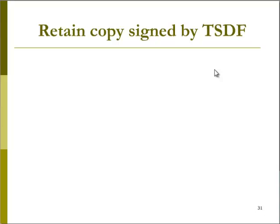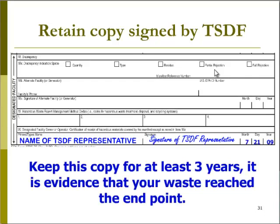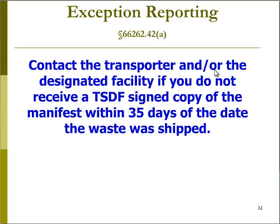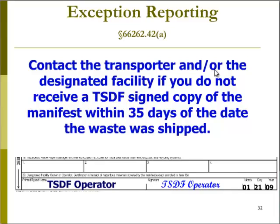A business must receive a copy of the manifest signed by the TSDF — it is this copy that the business must keep for at least three years. Exception reporting is found in Section 66262.42. The business must contact the transporter and perhaps the designated facility if it does not receive a TSDF-signed manifest within 35 days of the shipment date. If that contact does not produce a signed manifest, the business must write an exception report. For large quantity generators, this exception report must be submitted to DTSC within 45 days of shipment. Generators whose waste is shipped by water or exported, and small quantity generators, have 60 days to submit the exception report.